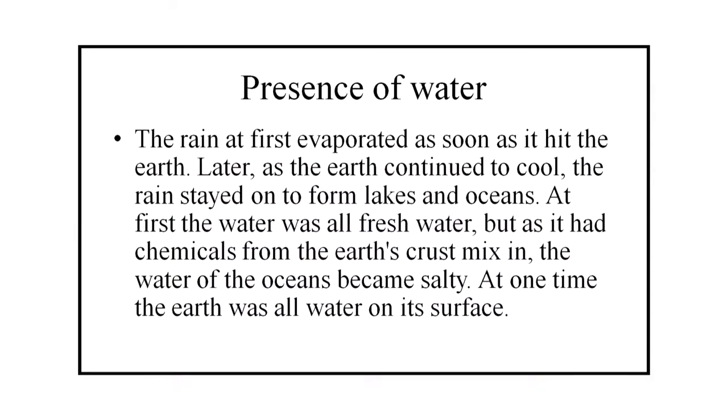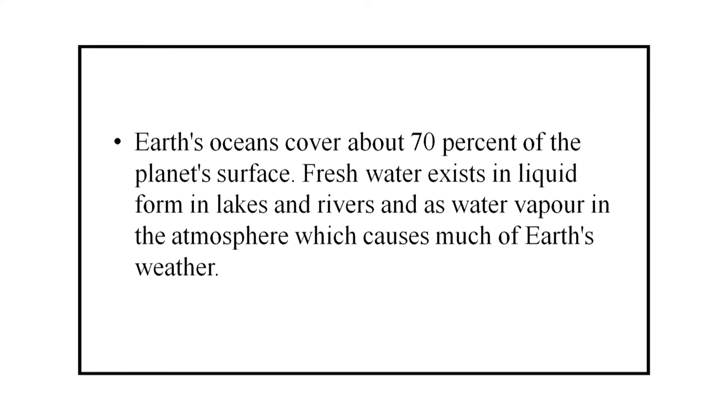The rain at first evaporated as soon as it hit the Earth. Later, as the Earth continued to cool, the rain stayed on to form lakes and oceans. At first the water was all fresh water, but as it had chemicals from the Earth's crust mixing, the water of the oceans became salty. At one time, the Earth was all water on its surface. Earth's ocean covered about 70% of the planet's surface. Fresh water exists in liquid form in lakes and rivers and as water vapor in the atmosphere which causes much of Earth's weather.